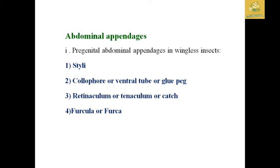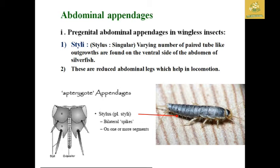The pre-genital abdominal appendages in wingless insects are: styli, colophore or ventral tube (also called the glupeg), and the retinaculum or tentacle, as well as the furcula or furca. First, looking at styli in wingless insects — for example in silverfish — they are a varying number of small tube-like outgrowths found on the ventral side of the abdomen. In silverfish, these are reduced abdominal legs helpful in locomotion.